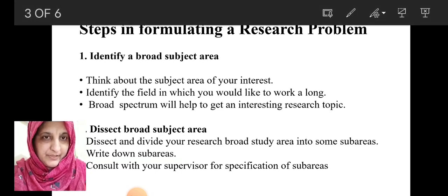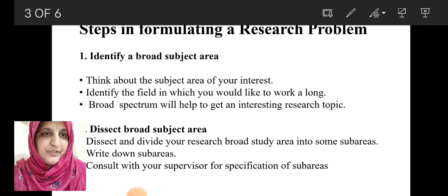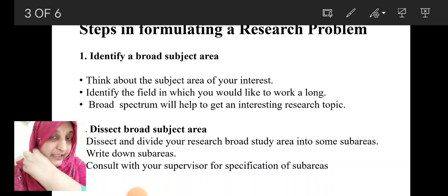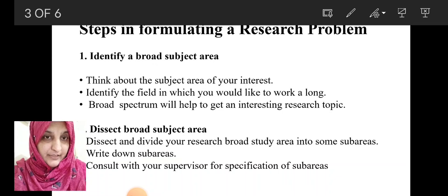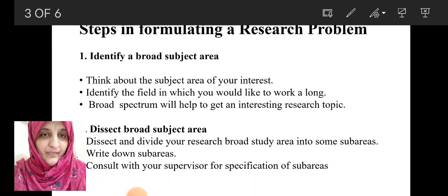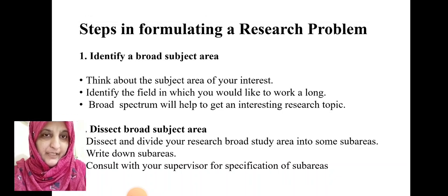After identification of a broad spectrum research area, you should move towards the second step, which is dissection of the broad spectrum subject area. You should dissect and divide the broad spectrum study area into small sub-areas, write down those sub-areas for categorization and listing, and then discuss them with your supervisor for specification of the sub-area which can be of your interest.